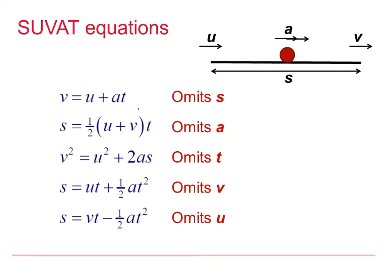And there's the list of all five SUVAT Equations. When drawing your diagram, make it clear: put the object in the middle, use a double-headed arrow for acceleration, the initial velocity U at one end, final velocity V at the other, and the displacement clearly labelled. Notice that the first equation omits S, the second omits A, the third omits T, the fourth omits V, and the fifth omits U — so you can always find at least one SUVAT equation that will work for a particular problem.